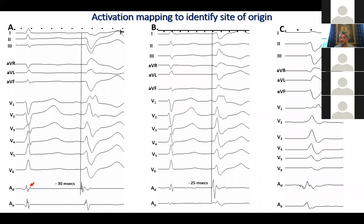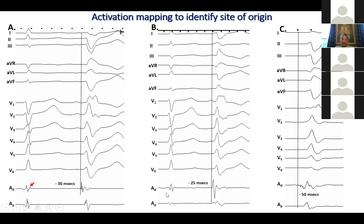The third scenario is at an older patient's site where ablation was successful - you see a highly fractionated, long electrogram that precedes the QRS complex for 15 milliseconds. There isn't an absolute criterion you can apply. You just have to map and find the earliest location. Sometimes you'll find a sharp electrogram and late potentials during sinus rhythm, other times a highly fractionated electrogram, and sometimes it may just be a regular electrogram that is simply the earliest.